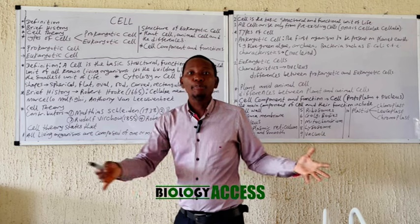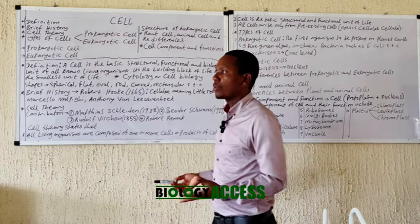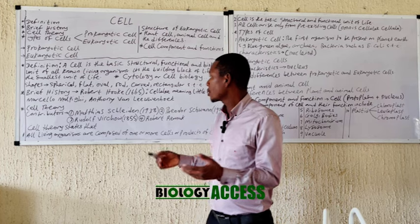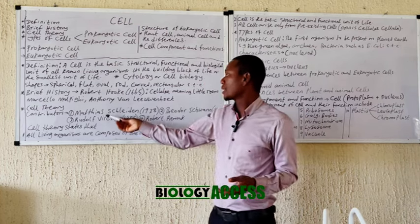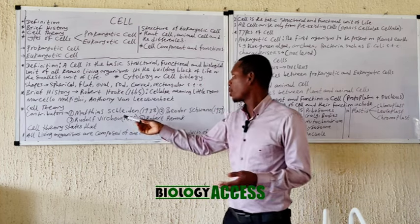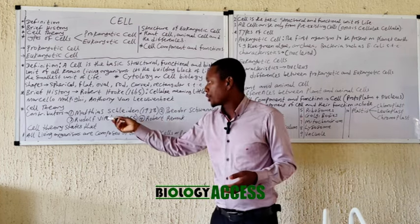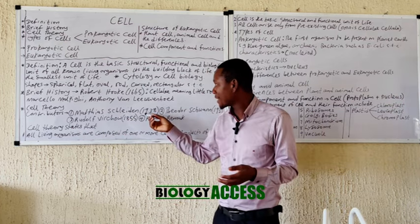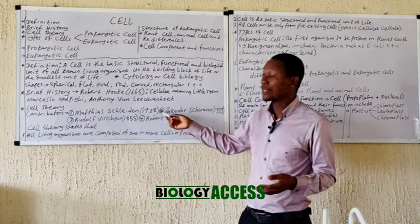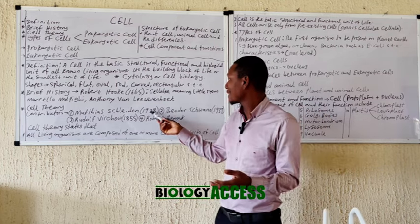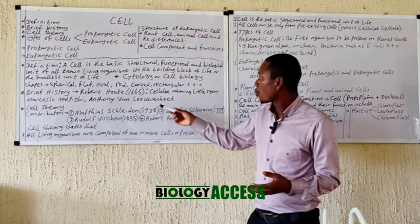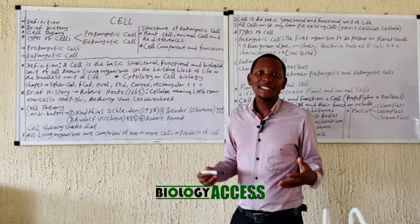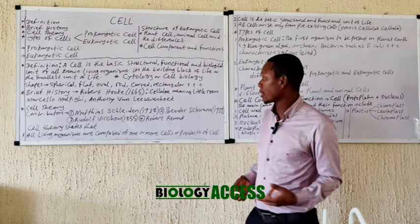The cell theory forms the basis or foundation of cell biology, and there are various contributors. We have Matthias Jacob Schleiden, who in 1838 — some historians say 1839 — established that the body of plants is made up of cells or products of cells.